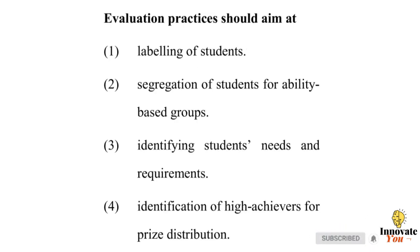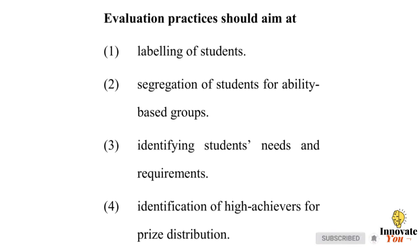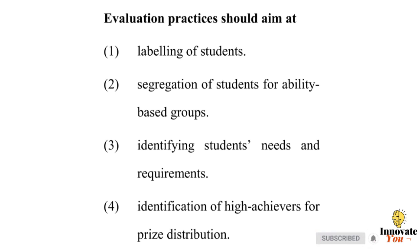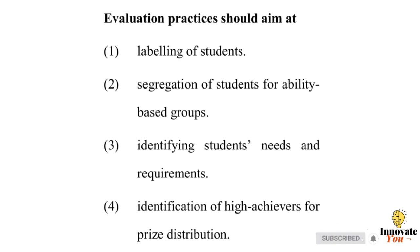Question 9: Evaluation practices should aim at — Option 1: Labeling of students. Option 2: Segregation of students. Option 3: Ability-based groups. Option 4: Identifying students' needs and requirements. Option 5: Identification of high achievers. Answer: 4 — Identifying students' needs and requirements.